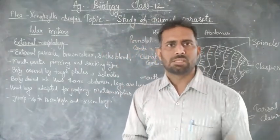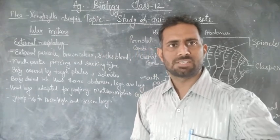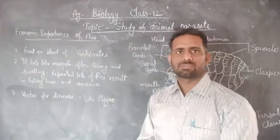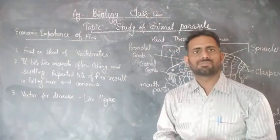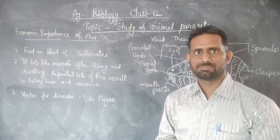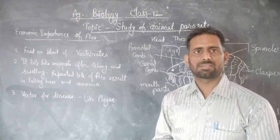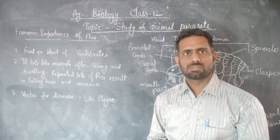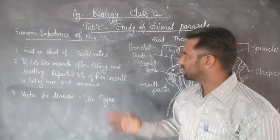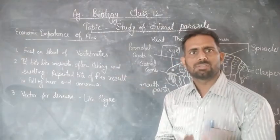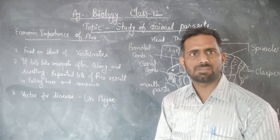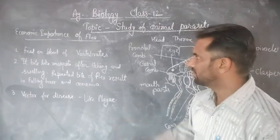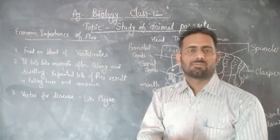Now we discuss the economic importance of fleas. Fleas feed on warm-blooded vertebrates such as cows, rats, sheep, squirrel, goat, horse, cat, dog, etc., using their piercing and sucking type mouthparts to feed on the blood of warm-blooded animals.